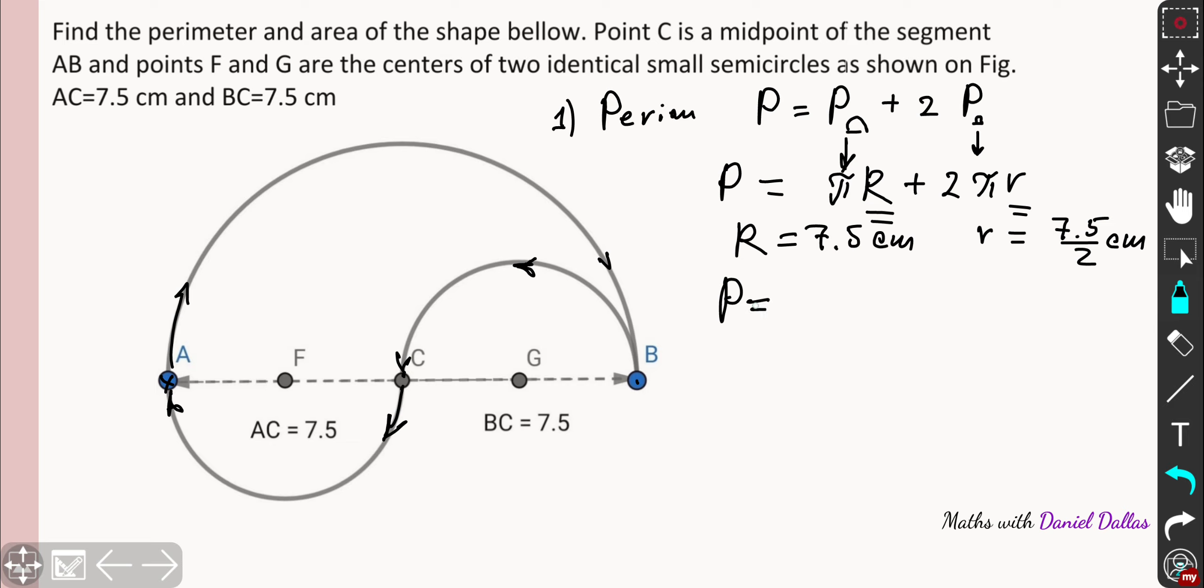So finally you'll get pi, you can factorize, you'll get 7.5, stays for R, and 2 times 7.5 over 2, basically both twos will be cancelled, and again you add 7.5 centimeters.